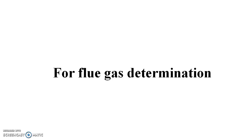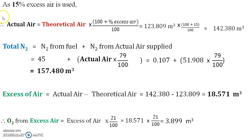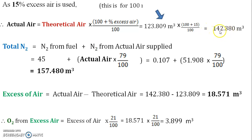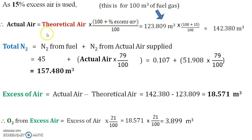Now for the flue gas determination, we start with the calculation of actual air. The percent excess air formula gives: actual air equals theoretical air multiplied by (100 plus percent excess) divided by 100. In this case there is 15% excess air, so the formula becomes theoretical air multiplied by 115 divided by 100. It is important to use the value for 100 meter cube of fuel, not for 1 meter cube. The answer comes to approximately 142.38.